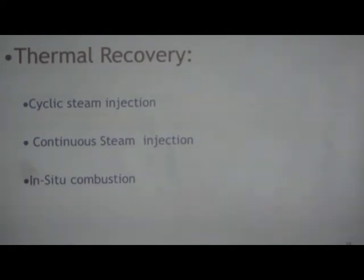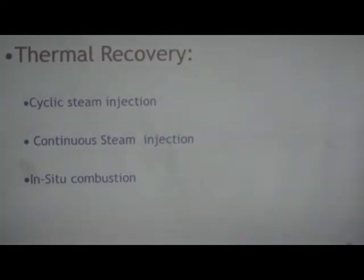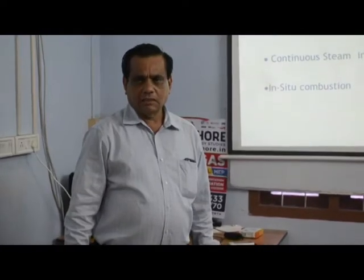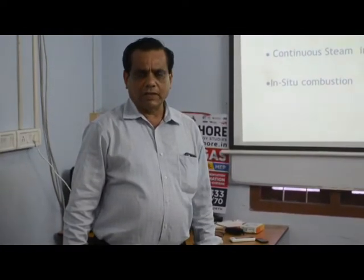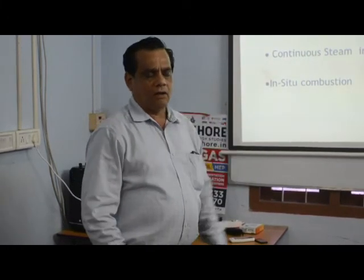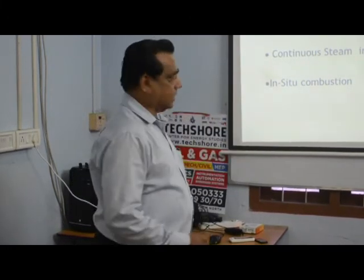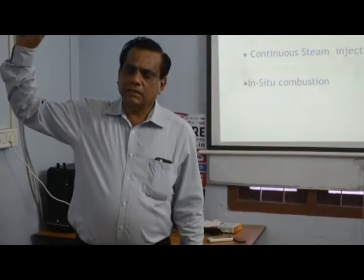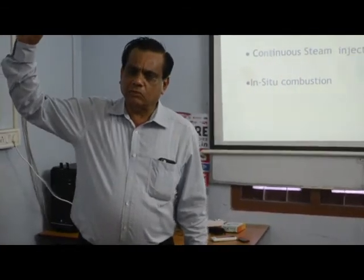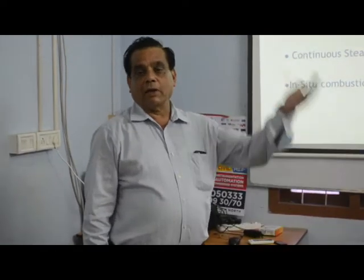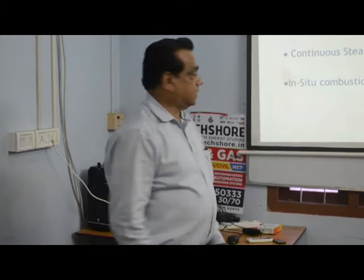Cyclic steam injection means you inject high-pressure, high-temperature steam through a well for about two weeks, then close the steam injection and wait two weeks, then produce oil from the same well. This is the cycle. For continuous steam injection, you inject steam through one well continuously, while another well produces oil and gas outside.